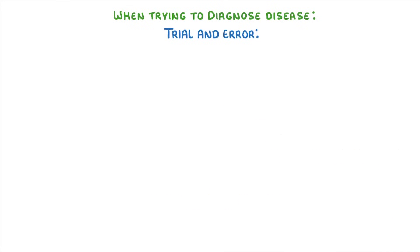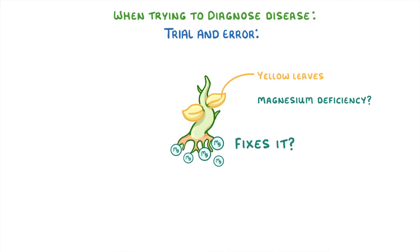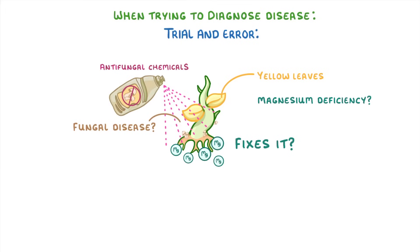A more basic method is trial and error. For example, if your plant has some yellow leaves so you think it has a magnesium deficiency, then you could just give it some magnesium and see if that fixes it. Or if you think it's a fungal disease, then you could spray it with antifungal chemicals and see what happens. The benefit of this technique is that you can just try one thing, and if it doesn't work, you try something else.